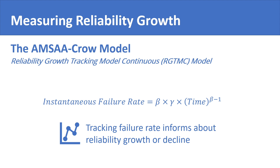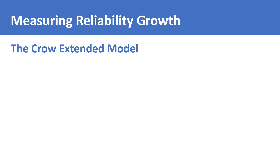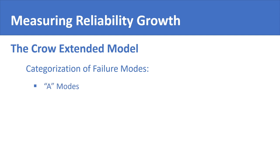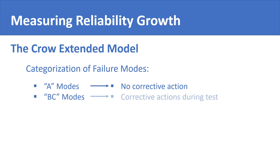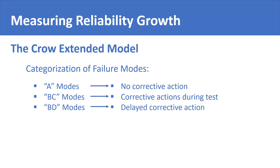Finally, the third model is the Crow Extended model. Like the name suggests, it is the extended version of the basic MSA-Crow model. The main difference is how it categorizes three types of failure modes: A modes, which are those failure modes that will not receive corrective action; BC modes, which are those failure modes that will have corrective action incorporated during the test; and BD modes, which are those failure modes whose corrective action is delayed until the end of the test phase.